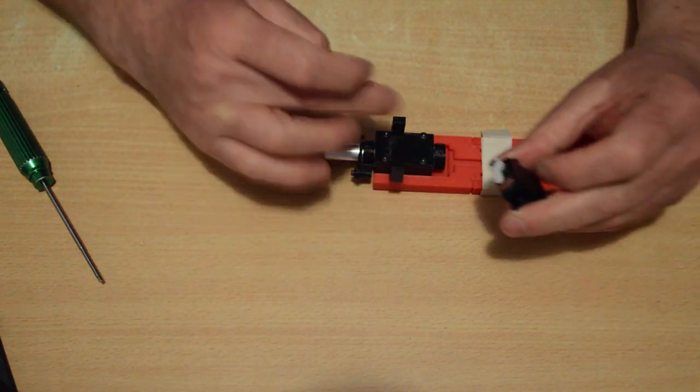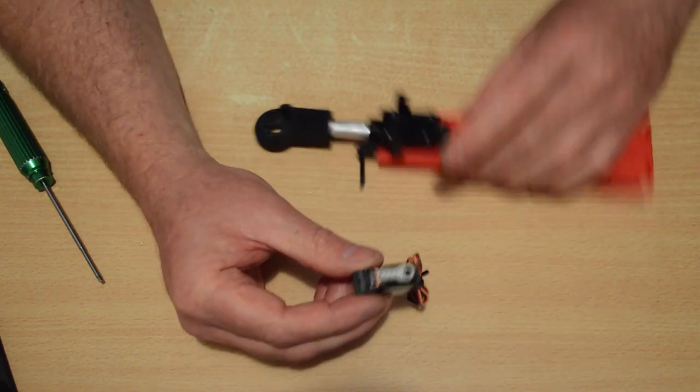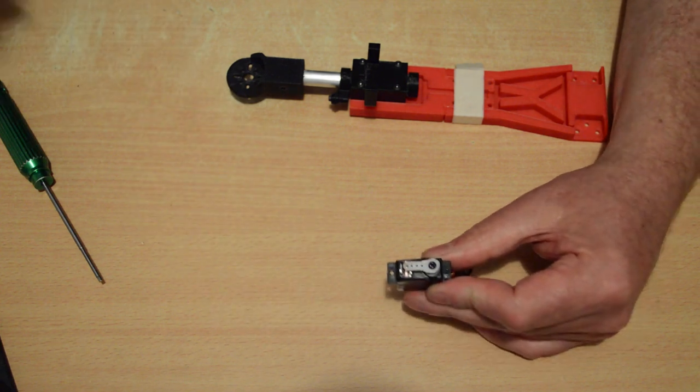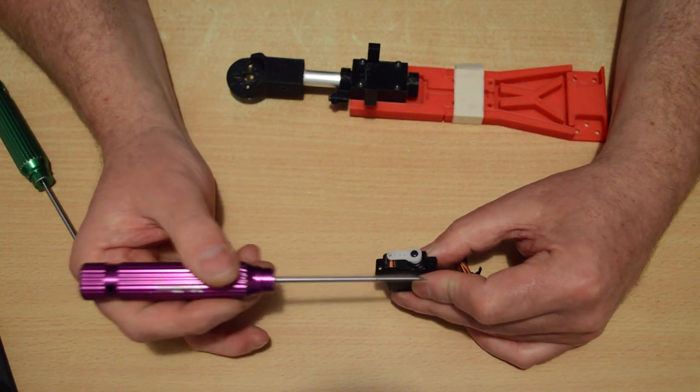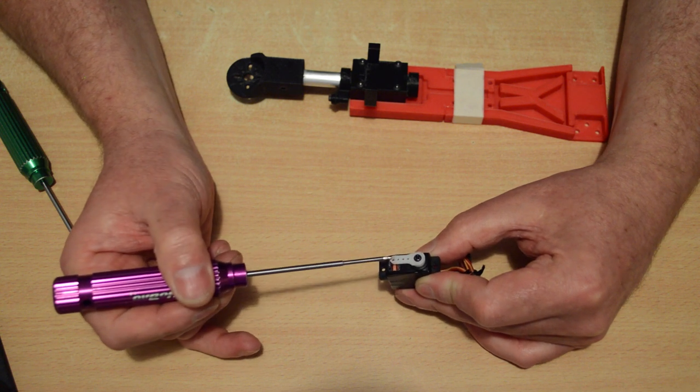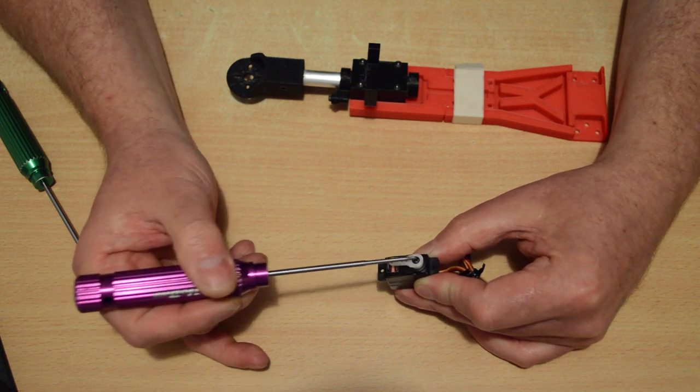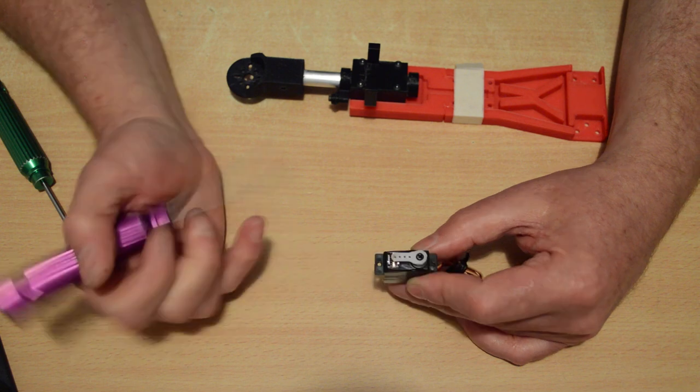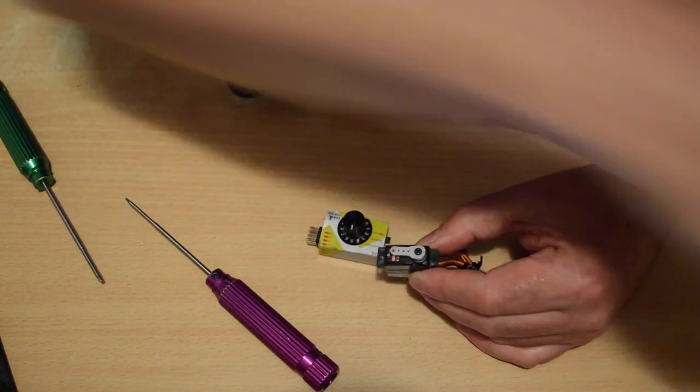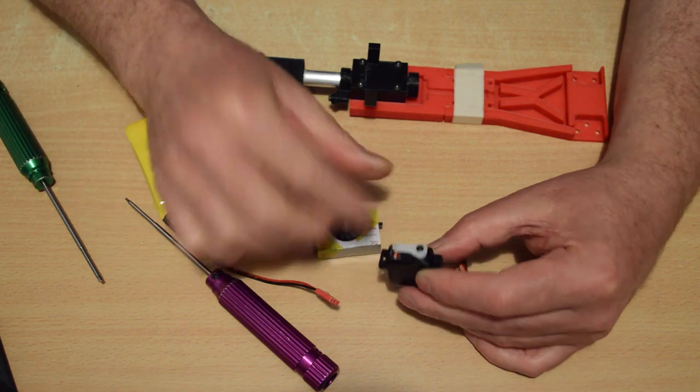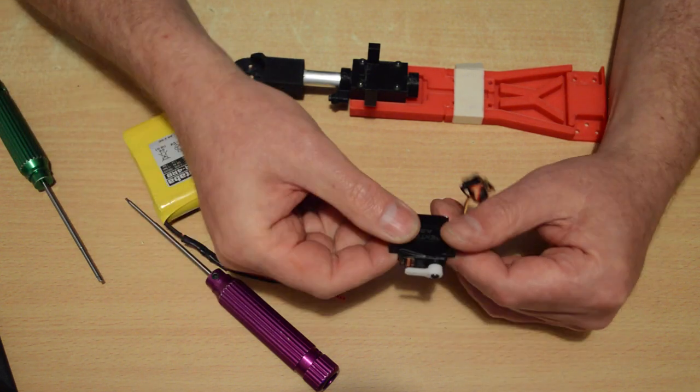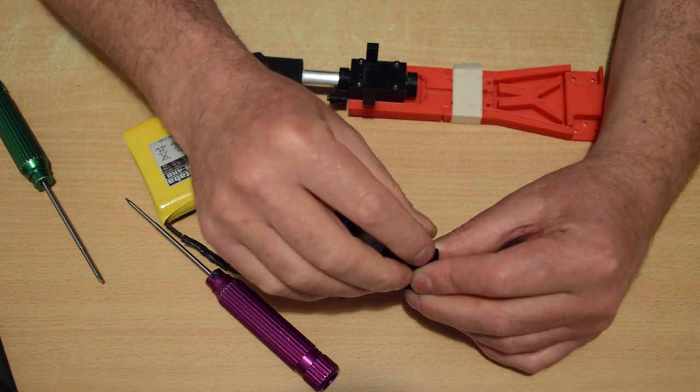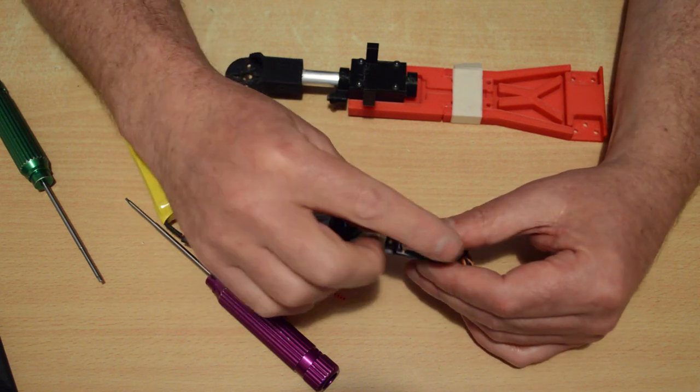Now before you fit the servo, one thing you need to do is get the horn on properly. Now this horn, the horn you need to use, this was actually a 4-way horn, and the distance between this hole you need to use and the centre is 13mm. The other thing you need to do is what they call 90 degree the servo. So I use a servo tester and a battery to power up the servo and set it to the centre position and you want the horn to run, as I've got it there, as straight as possible down the centre of the servo. You might have to move the horn around a couple of times and try a few different directions to get one that sits close to straight on.